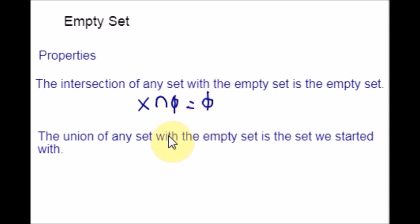Now let us move on to the second property. The union of any set with the empty set is the set we started with. This is because there are no elements in the empty set, and so we are not adding any elements to the other set when we form the union. So this can be written symbolically in this way: union of the set X and the empty set will give you the set that you started with, X ∪ Ø = X.